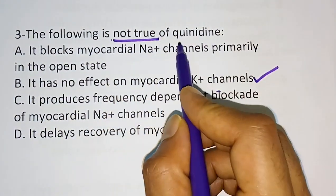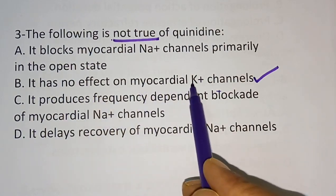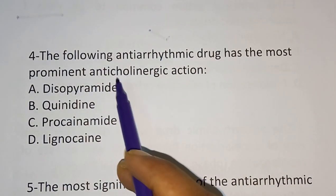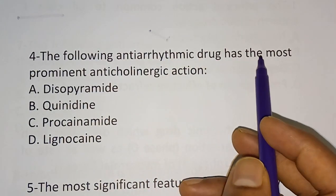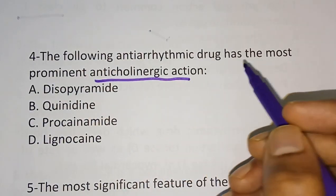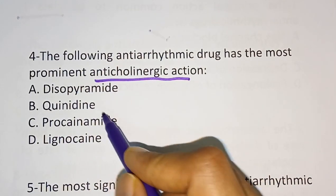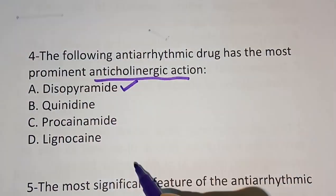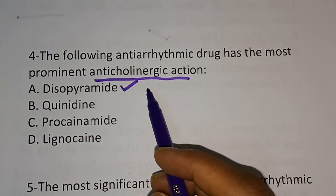The question asked what is not true. Quinidine actually blocks the potassium channel — it causes potassium channel blockage along with sodium channel blockage. So stating it has no effect on the potassium channel is false, making option B the correct answer. Question 4: Which anti-arrhythmic drug has the most prominent anti-cholinergic action? Options are disopyramide, quinidine, procainamide, and lignocaine. The correct answer is disopyramide.